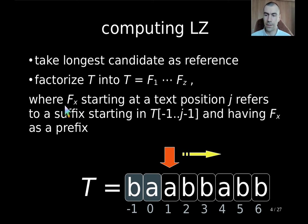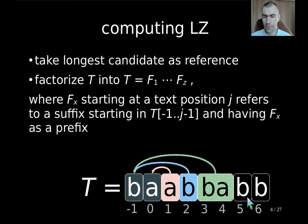It always takes the longest candidate as a reference while factorizing the text into the factors F1 until Fz, where given that the factor Fx starts at the text position j, it has a reference to a suffix that starts at a previously already processed text position, and the suffix has Fx as a prefix. We start the factorization after our prepended characters because they don't belong to the factorization, we just need them for the references. So here what we do is we query what the longest previously appearing prefix is, like here A appears previously but not AB. So this is the right answer. Then we have B appearing here again but not BB. Then BA appears previously but not BAB and so on.